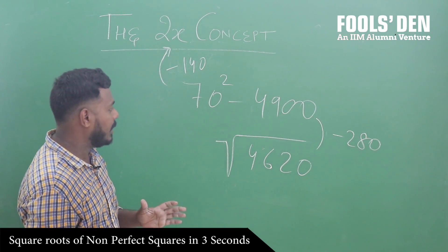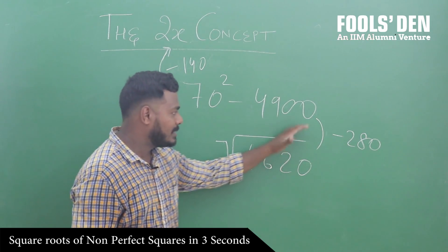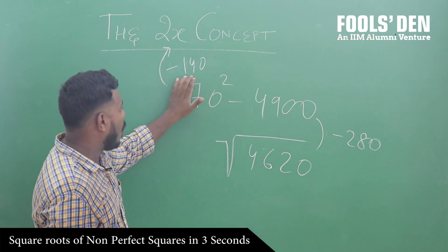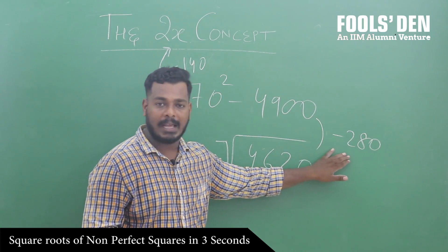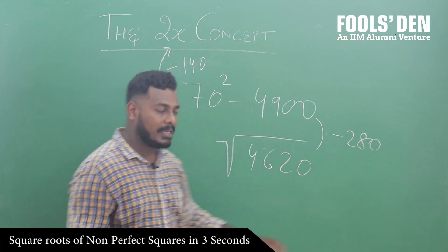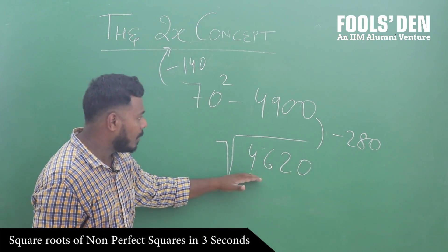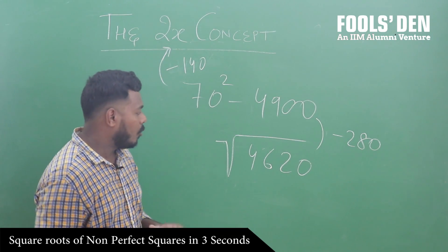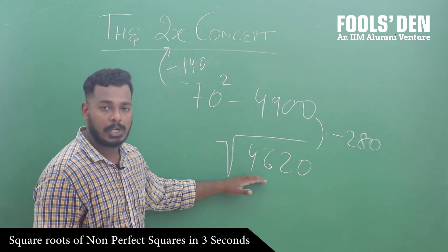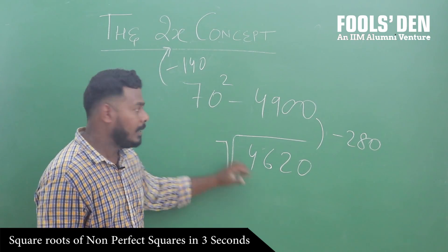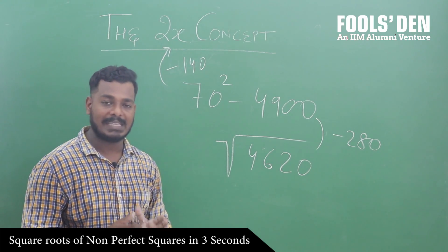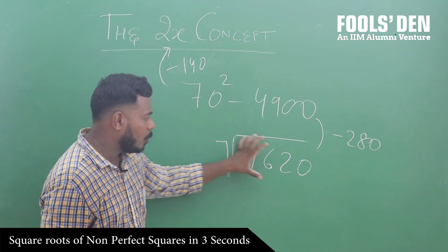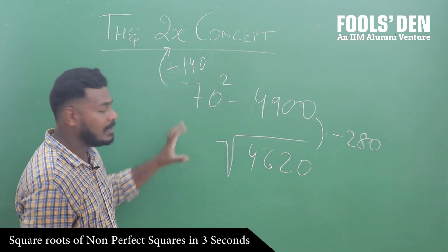Using the same concept, यह number इससे करीबन 280 कम है. अब 140 को कितनी बार लेने से 280 आता है — 2 बार. That means यह number इस number से करीबन 2 squares कम है. And we can say that 4620 approximately 70 से 2 नीचे करेंगे, तो 68 का square है. So इसका square root आएगा approximately 68.